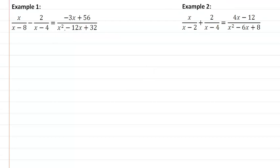So let's look at example 1 here. First thing I need to do is I need to factor this one polynomial. And we're looking at factors of 32 that add up to be 12.